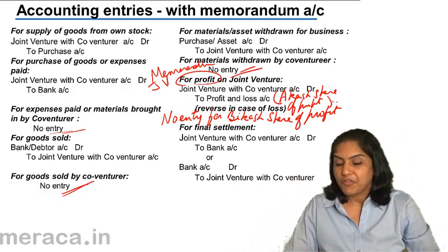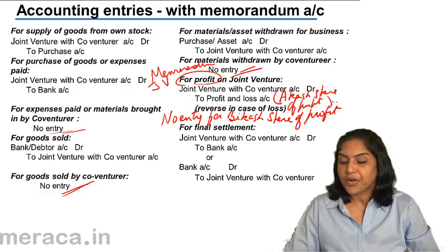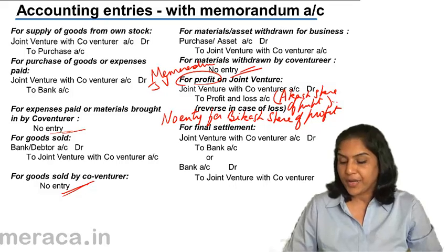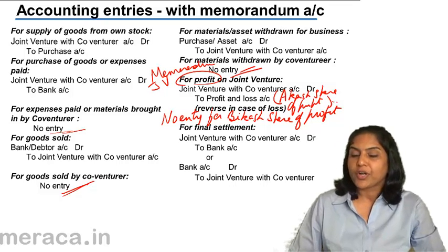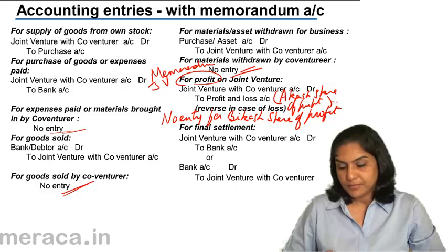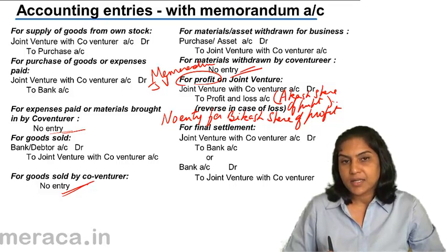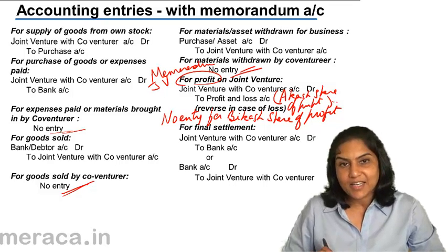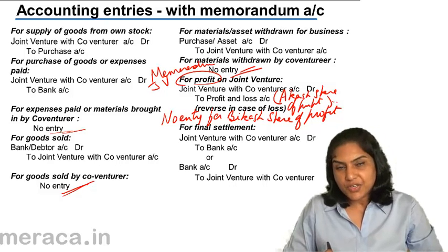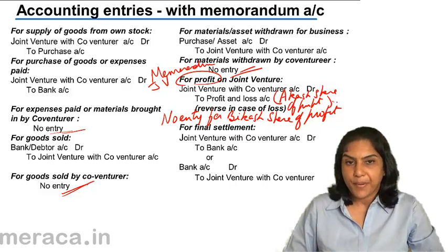For final settlement, it is either joint venture with co-venturer account debit to bank, or bank account debit to joint venture with co-venturer account. It is the balancing figure — either money is receivable or money is payable.